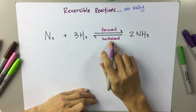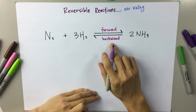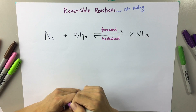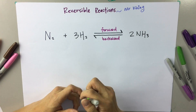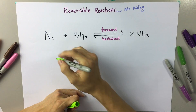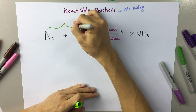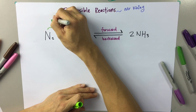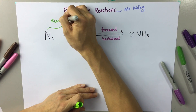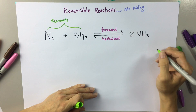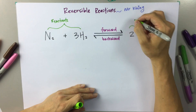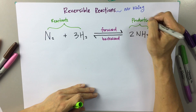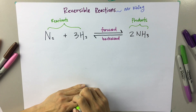This is what we call a reversible reaction. Also, always remember: on the left-hand side, this is what we call reactants. On the right-hand side, this is what we call products.